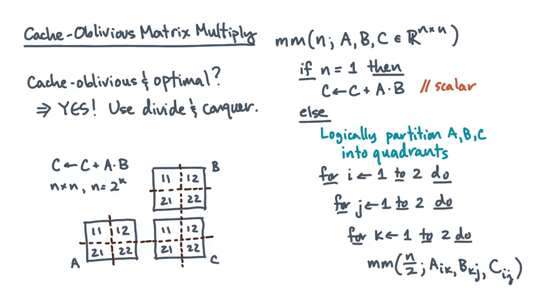As the pseudocode reveals, this algorithm is cache oblivious. Unlike the blocked algorithm, it makes no reference to the size of the cache or of the line size.